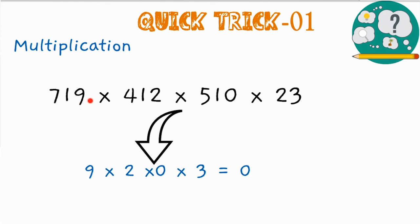Let us separate the digit 9 from the first number 719, from 412 separate the units place digit 2, from 510 separate the value 0, and from 23 separate its units place digit 3. And then obtain the product of this separated digit.